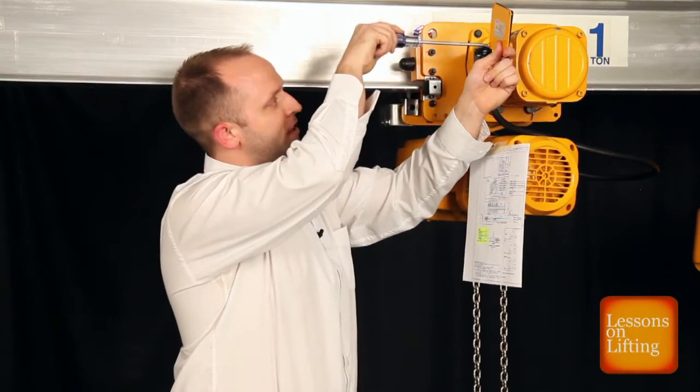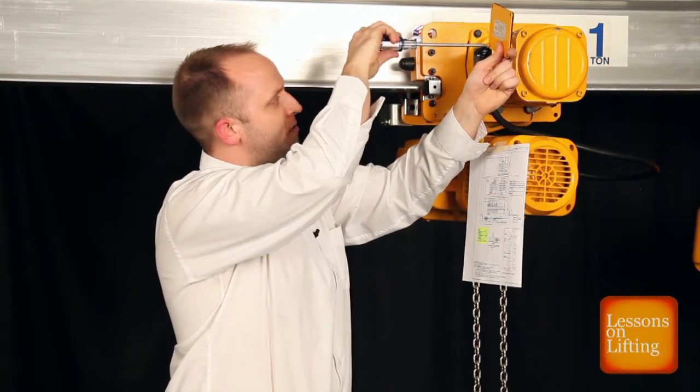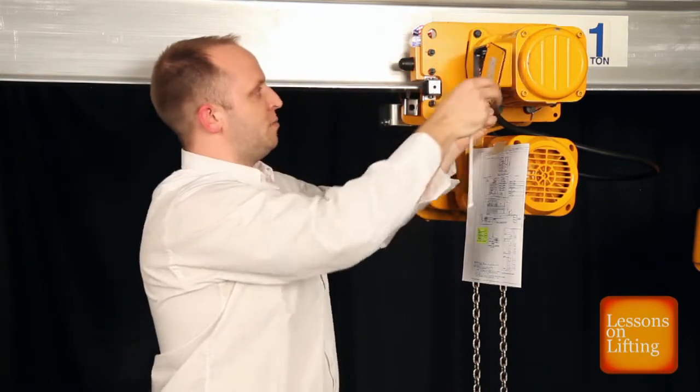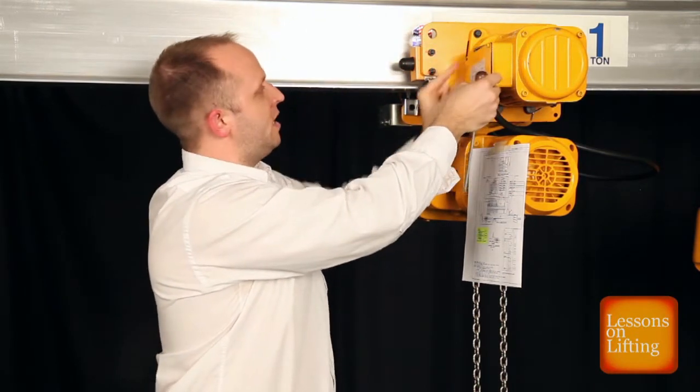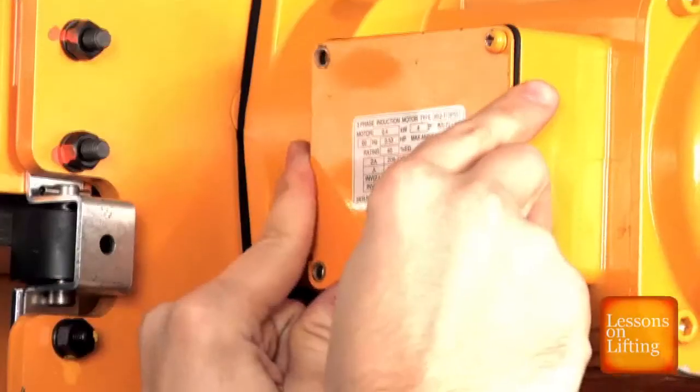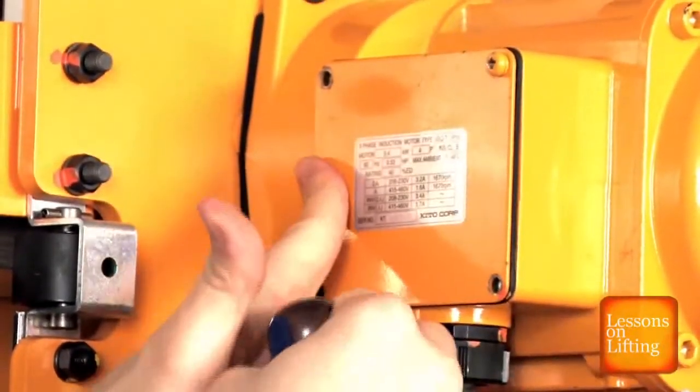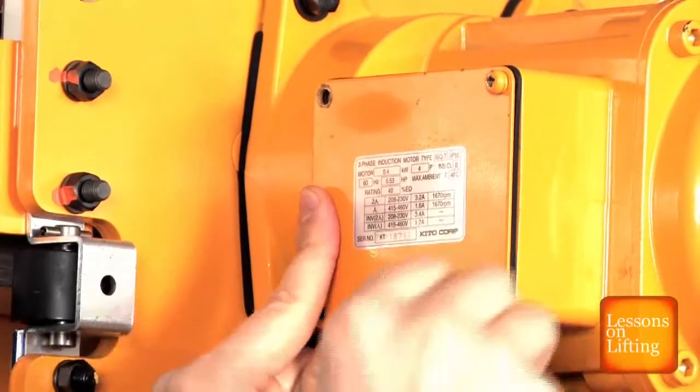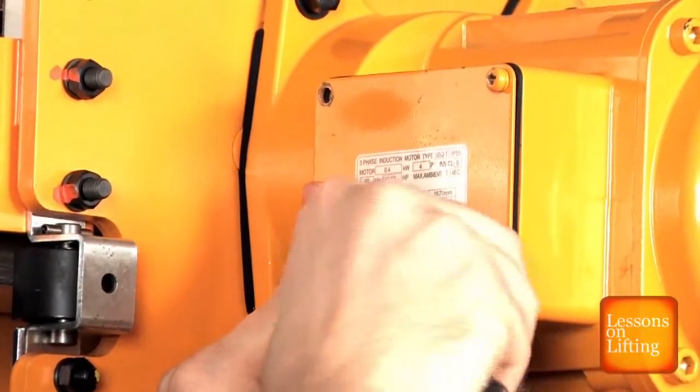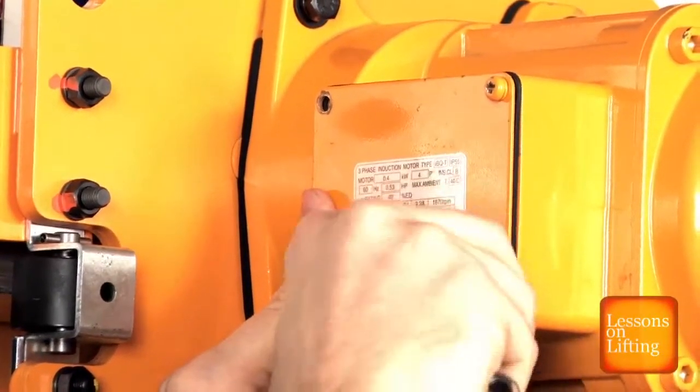Loosen that one screw that is holding the plate in place at the moment. Swing it back into place while taking care that you're not pinching any wires. Make sure the gasket is lined up properly with the holes. And then using the other three screws, you're going to reinstall them and tighten the plate back into place.